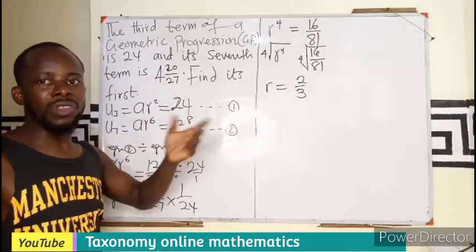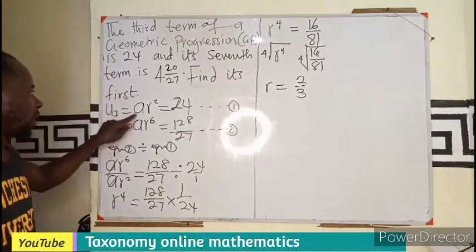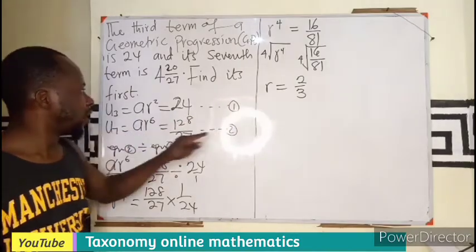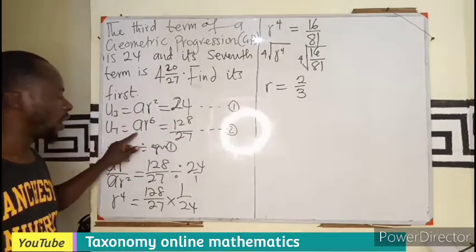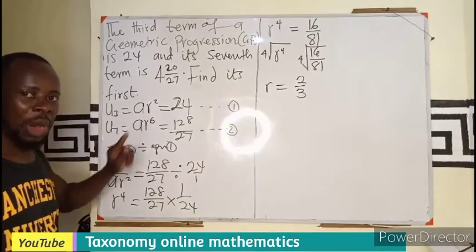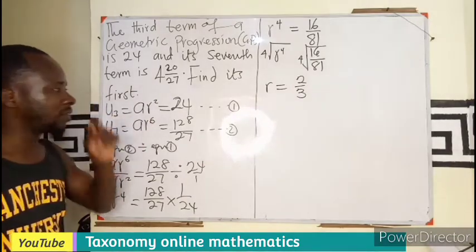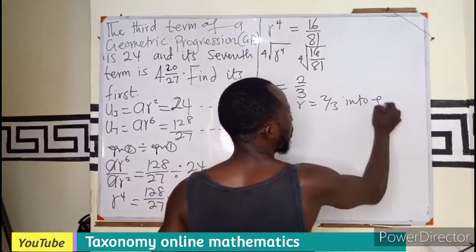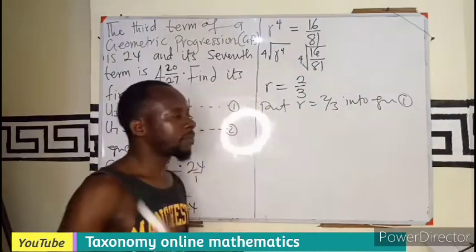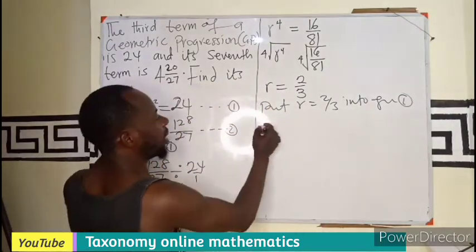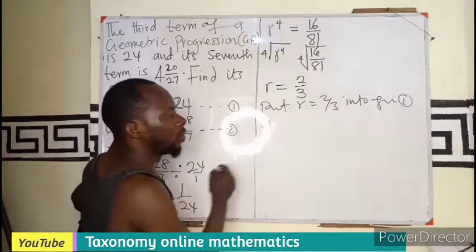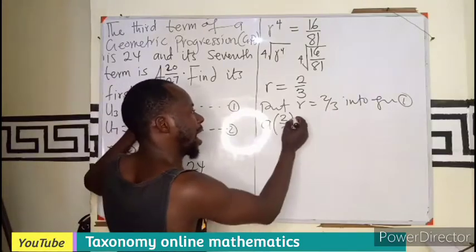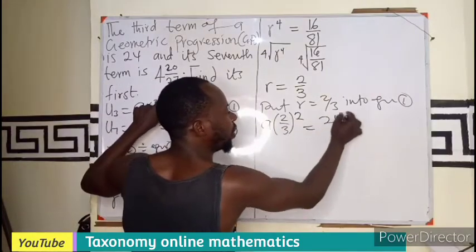But that is not our concern. We are looking for the first term, which is the a. So I can put the value of r into equation 1 or equation 2. I prefer the power of the smallest. So put r equals to 2 over 3 into equation 1. That is going to be a times r², which is now 2 over 3 squared, equals to 24.